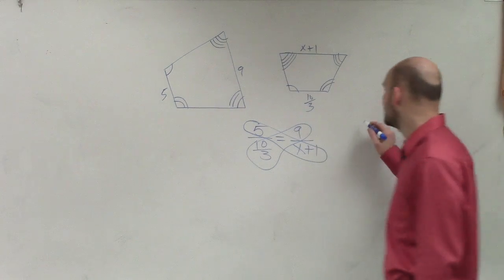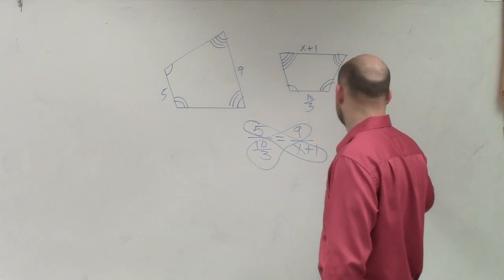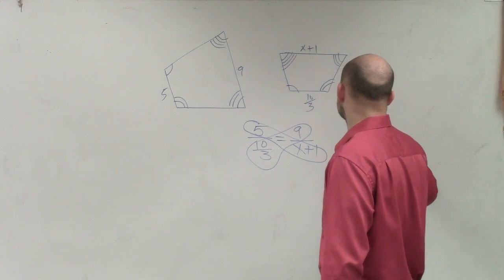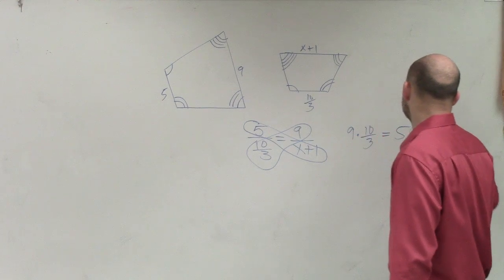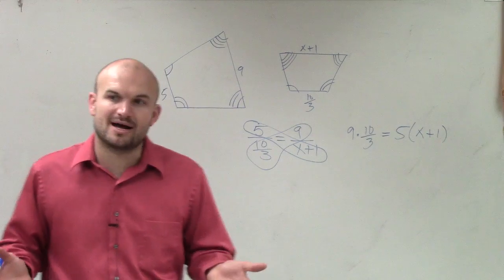So now you apply your cross product, and you have 9 times 10 over 3 equals 5 times x plus 1. Please make sure you put the parentheses around your binomial again.